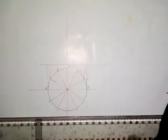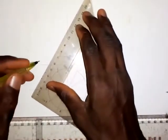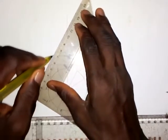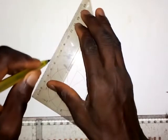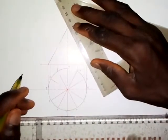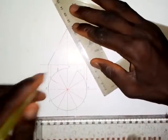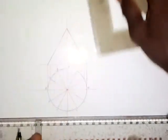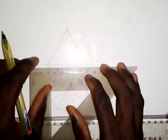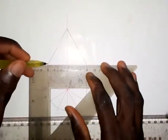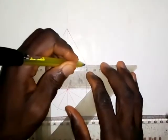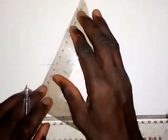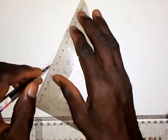The next thing is to connect these points together, making them thick lines for the sides of the elevation. I also make the base a thick line. Then I join each of these points to the apex of the cone.